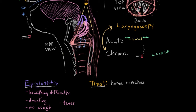Treatments for chronic laryngitis are more focused on reducing exposure to the chemical irritant or whatever is causing it. For example, quitting smoking can help resolve chronic laryngitis, or if the patient is a singer, they can decrease voice use and pursue proper speech counseling to reduce trauma to their voice box.